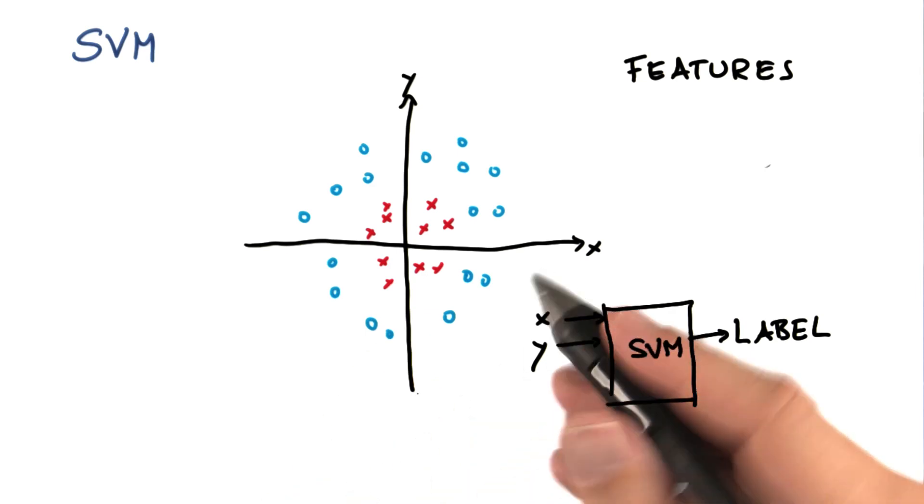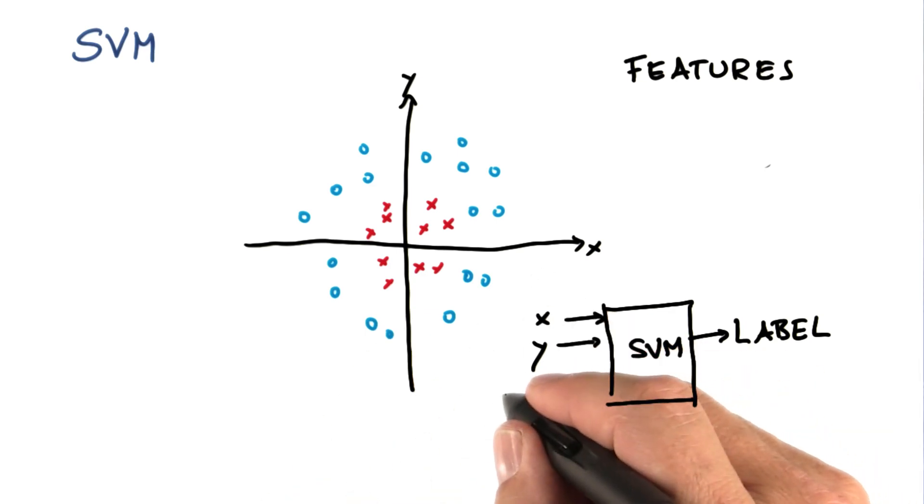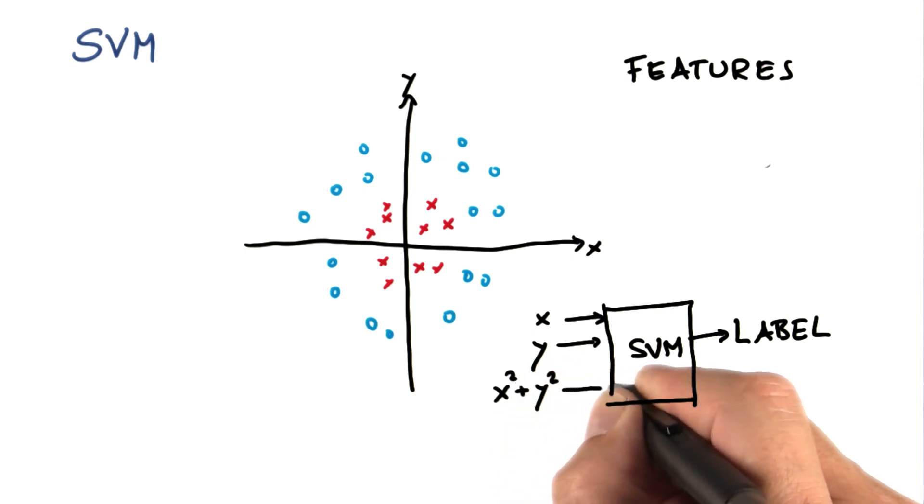So we're going to pick a feature that is helpful for my example here. It's going to be x squared plus y squared. Why that? You'll see in a minute.